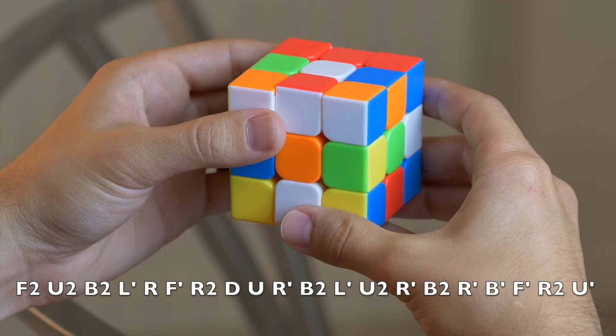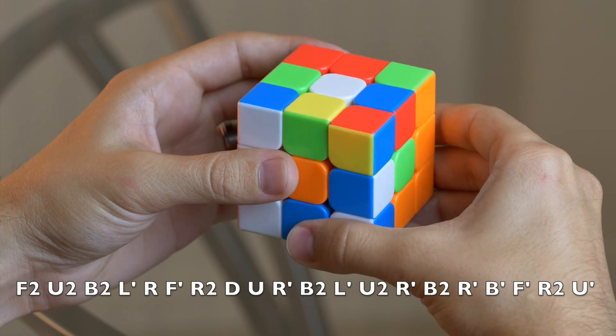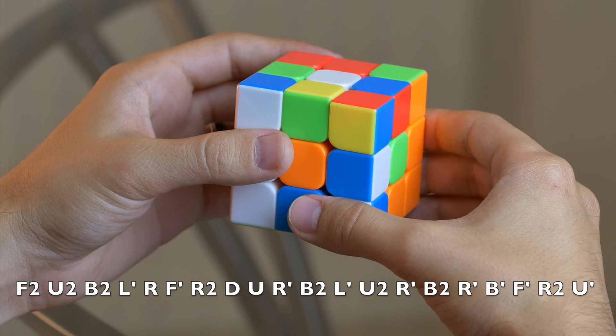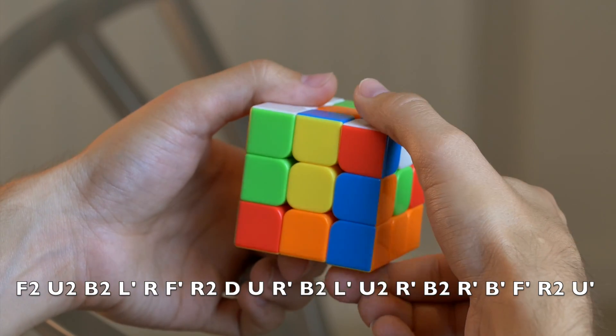Front prime, right two times, down. And just to make sure that we're doing down the correct way, as if you're looking at it, it'd be down clockwise.